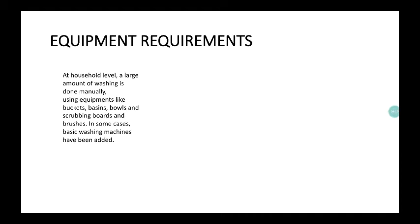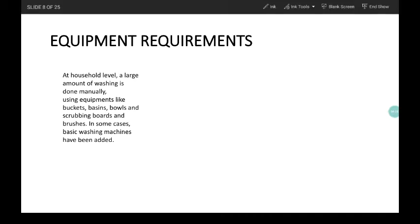What equipments required? There are mainly three type of equipments. At household level, a large amount of washing is done manually using equipments like bucket, basins, balls, scrubbing boards and brushes. In some cases, basin washing machine have been added.